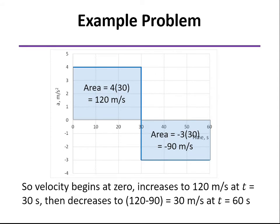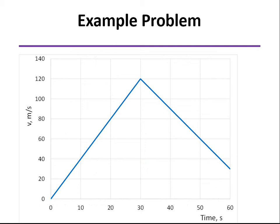What that means is over that one-minute time step, the velocity starts at 0, we increase it by 120, so we end up at a velocity of 120 meters per second at t equals 30 seconds. Then we decrease by 90 meters per second, so we end up at the end of that one minute at 30 meters per second. And so we can plot that, as shown.